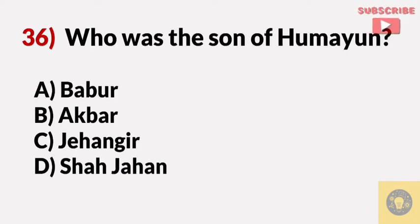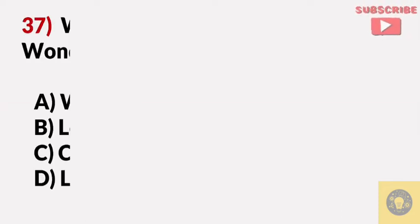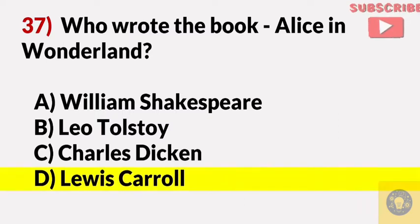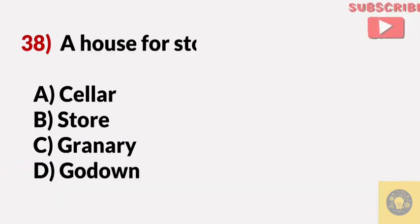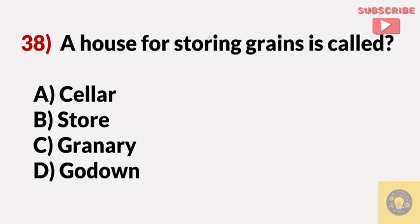Who was the son of Humayun? Answer B, Akbar. Who wrote the book Alice in Wonderland? Answer D, Lewis Carroll. A house for storing grains is called? Answer C, Granary.